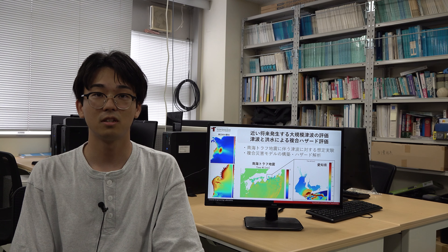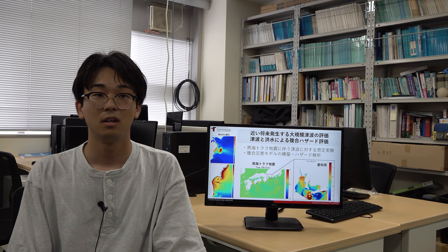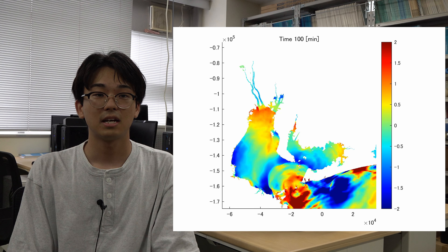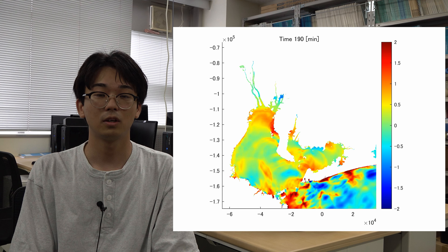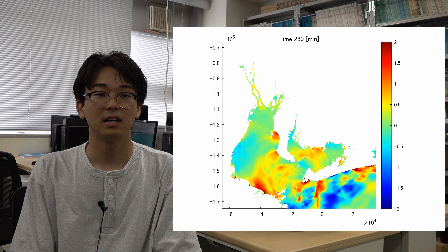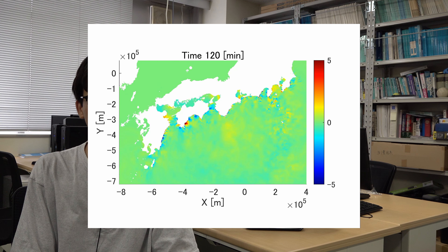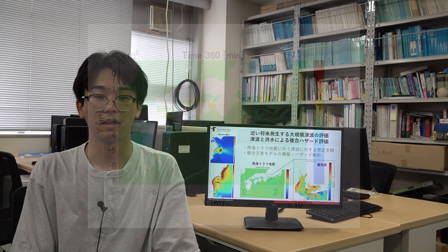続いて、南海トラフ地震による津波に関連した研究です。南海トラフ地震などの大規模地震と、地球温暖化による海面上昇や洪水が重なると、沿岸・河口域の浸水に直結してしまいます。そこで、津波と洪水が同時に発生した場合の水位上昇量や危険箇所の把握を目的に、数値モデルによる複合災害評価を行っています。様々な数値解析手法を用いた想定実験や複合災害モデルの構築、ハザード解析を進めています。